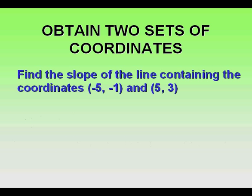Let's take this problem first. Let's find the slope of the line containing the coordinates negative five comma negative one and five comma three.